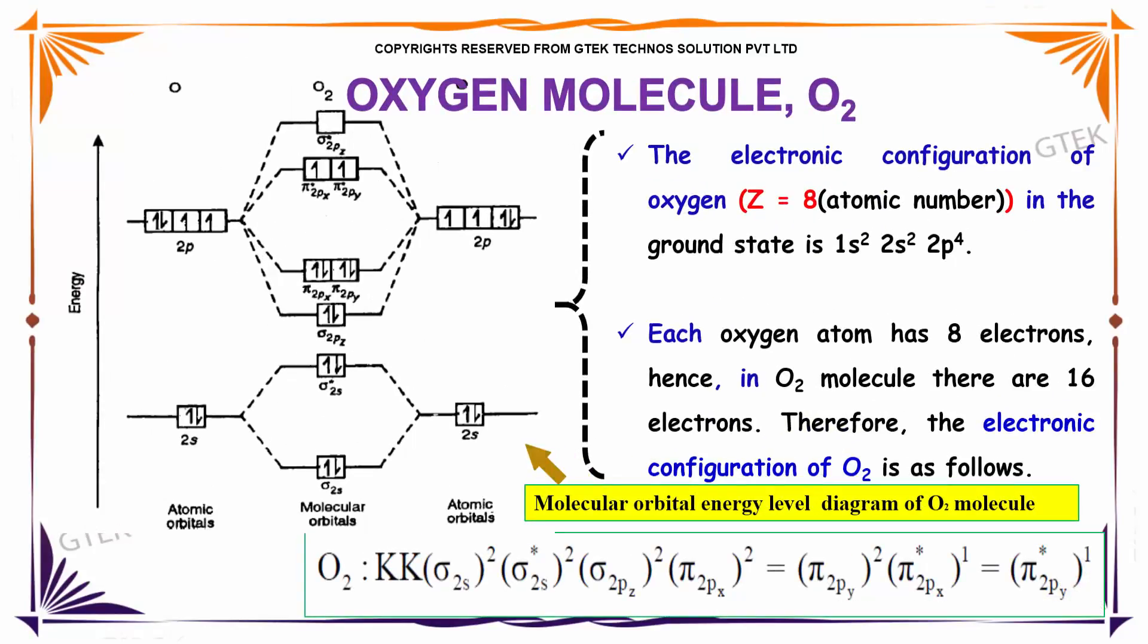The electronic configuration of oxygen is Z is equal to 8. 8 is the atomic number in the ground state. That's 1s2, 2s2 and 2p4.